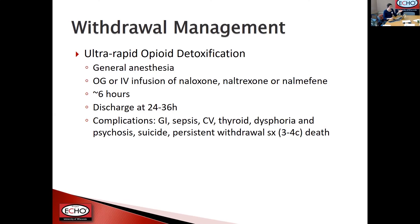Finally, there is something called ultra-rapid opioid detoxification, though it is rarely done and not really recommended. The patient goes under general anesthesia and receives either an orogastric or IV infusion of an antagonist like naloxone for about six hours, then is observed for 24 to 36 hours and discharged. There are serious complications including heart attacks, psychosis, suicide, and other causes of death. Additionally, since the half-life of different medications varies and doses like fentanyl can stack, some patients still experience withdrawal symptoms even after that six-hour mark. This is not something done very much — just important to know it exists.